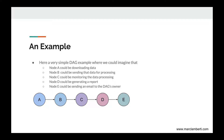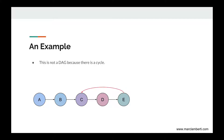You can imagine that task A downloads data, then B sends that data for processing by running a Spark job, then node C monitors this job, and so on. That is a basic example of what a DAG is. A non-DAG example would be a graph where a dependency of C to E creates an infinite loop — and that is not allowed, because a DAG cannot have any cycle.